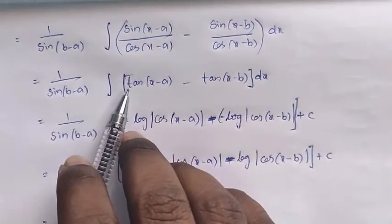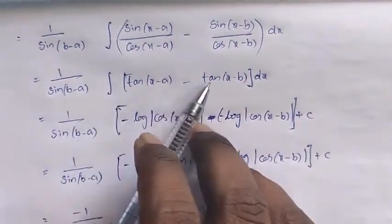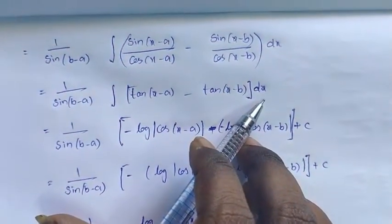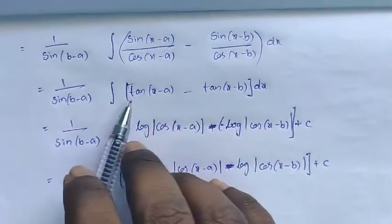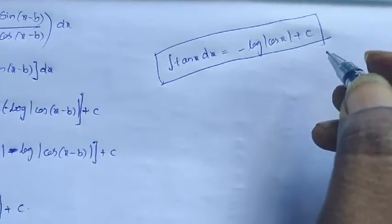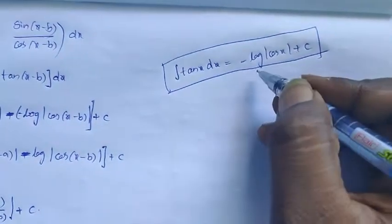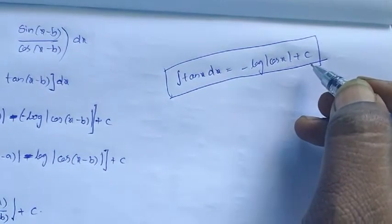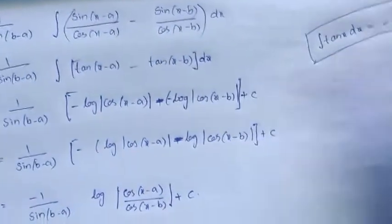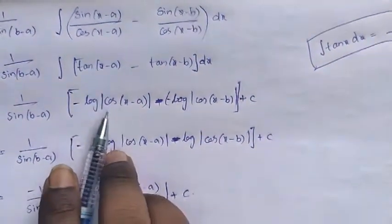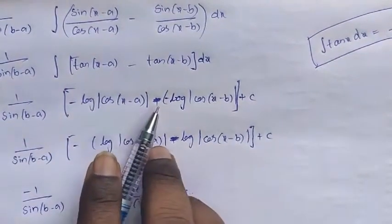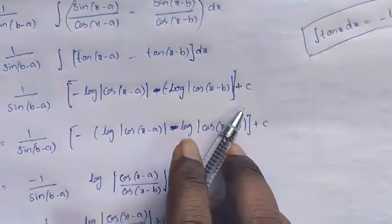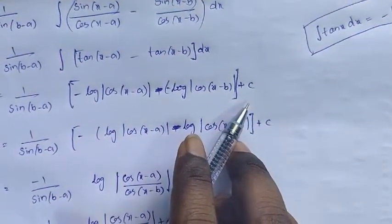Now it becomes the integration of tan(x minus a) minus tan(x minus b) dx. Applying the standard formula: integration of tan(x) dx equals minus log|cos(x)| plus constant. Applying that: minus log|cos(x minus a)| minus of minus log|cos(x minus b)| plus arbitrary constant c.